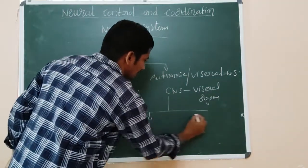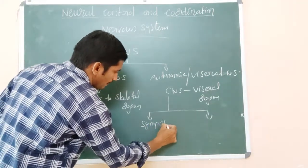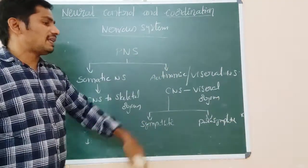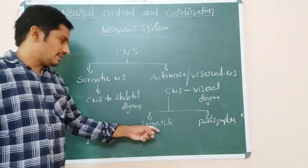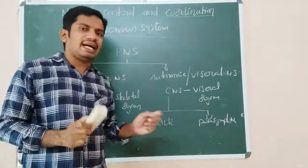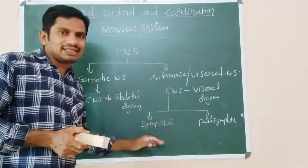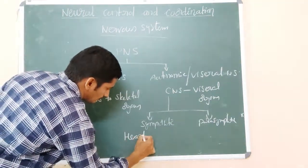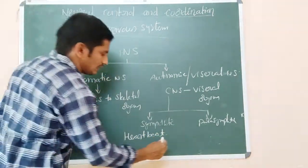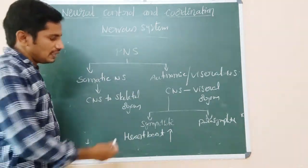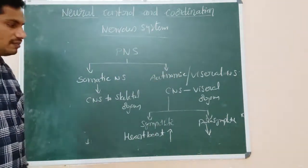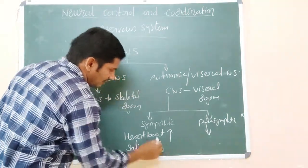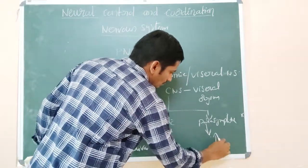In the autonomic nervous system there are two categories: the sympathetic and parasympathetic nervous systems. These two together are antagonistic to each other — meaning one should activate a reaction while the other should inhibit it. For example, heartbeat will be accelerated or increased by the action of the sympathetic nervous system, and the same function will be inhibited by the parasympathetic nervous system. Moreover, the secretion of saliva will be inhibited by the sympathetic nervous system and stimulated by the parasympathetic nervous system.